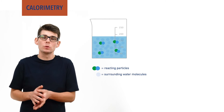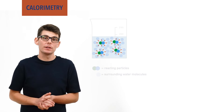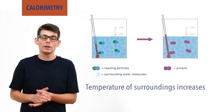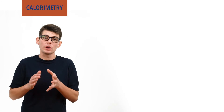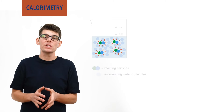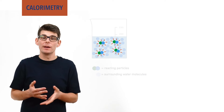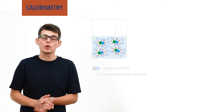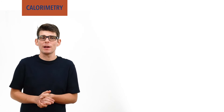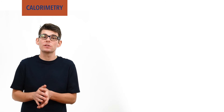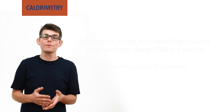If the reacting particles release heat energy overall during a reaction, this energy will flow into the surroundings and cause the temperature of the surroundings to increase — an exothermic reaction. If the reacting particles absorb energy overall during the reaction, this energy has flowed from the surroundings to the particles and now the surroundings have less energy, causing the surroundings' temperature to decrease — an endothermic reaction. How much the surrounding temperature changes is based on how much heat has flowed in or out of the reacting particles and is therefore based on the enthalpy change of the reaction.